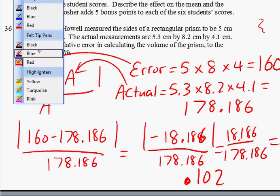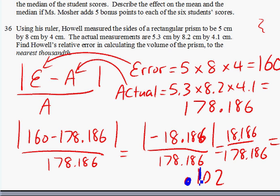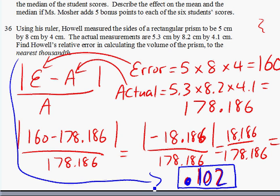So the relative error is .102 and we solved it according to the question and we rounded it off to the nearest thousandth. Now the most difficult part about this question is probably just memorizing this formula. The formula is right here, I'm going to put a box around it in blue. It's the error minus actual, take the absolute value of that and divide it by the actual measurement.